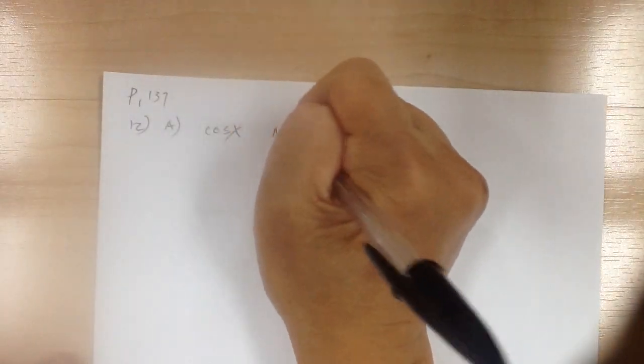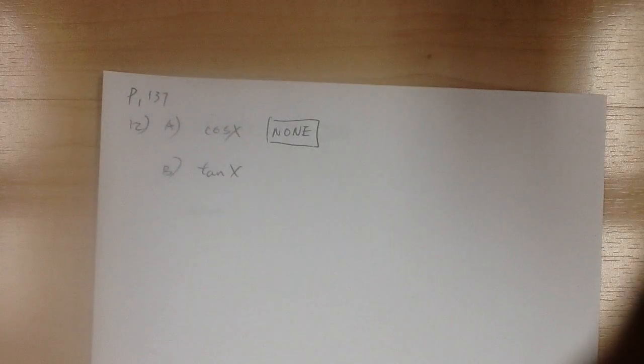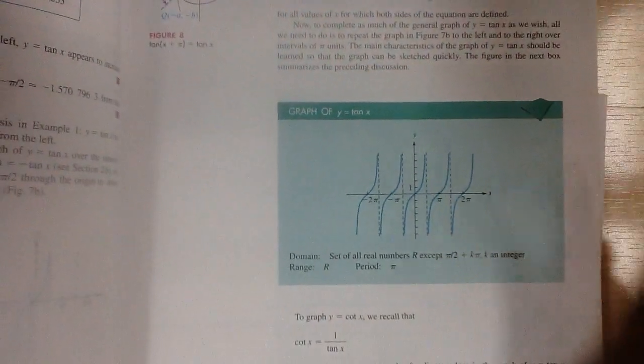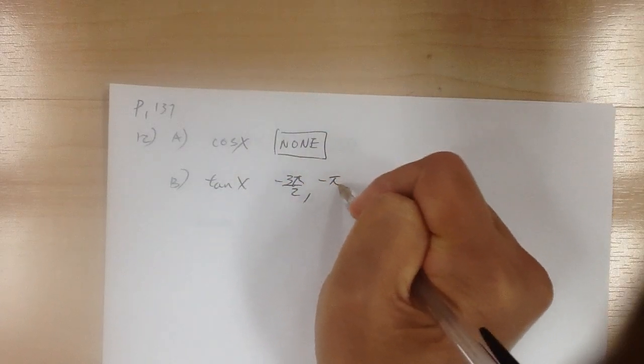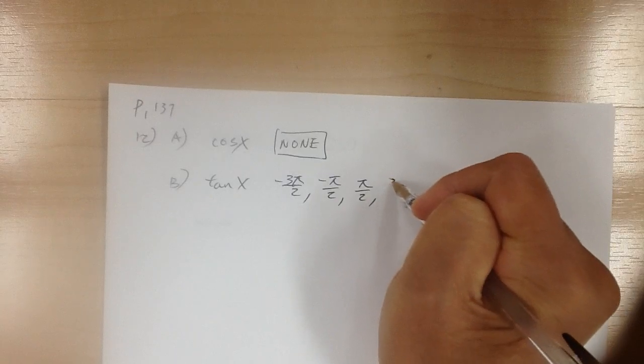Number 12. For 12a, cosine x — since the cosine graph has no asymptotes, every point is defined, so the answer is none. For 12b, tangent x — the asymptotes are at negative 3pi over 2, negative pi over 2, positive pi over 2, and positive 3pi over 2.